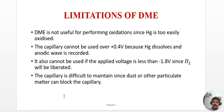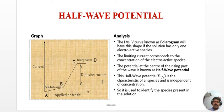Limitations of the DME: mercury can be too easily oxidized, so it cannot be used for oxidations. The capillary cannot be used above +0.4 V because mercury dissolves and an anodic wave is recorded. It cannot be used below −1.8 V since hydrogen will be liberated. Also, the capillary is difficult to maintain as dust or particulate matter can block it.